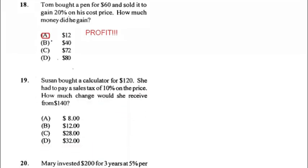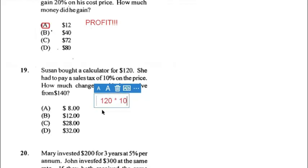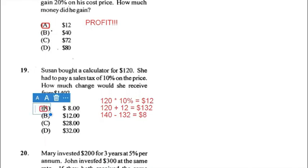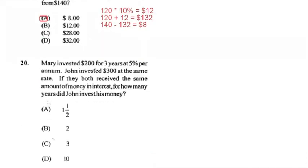Number nineteen: Susan bought a calculator for $120 and had to pay a sales tax of 10 percent, which is $12. The total she paid is $120 plus $12 equals $132. She gave the cashier $140, so the change she received is $140 minus $132, which equals $8. Therefore the answer is A.